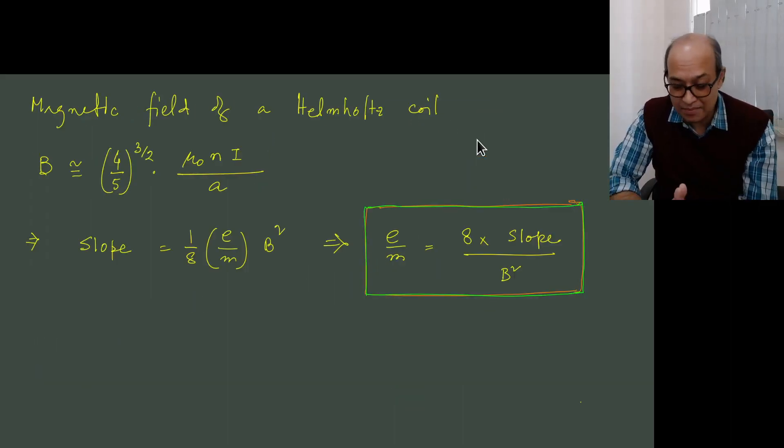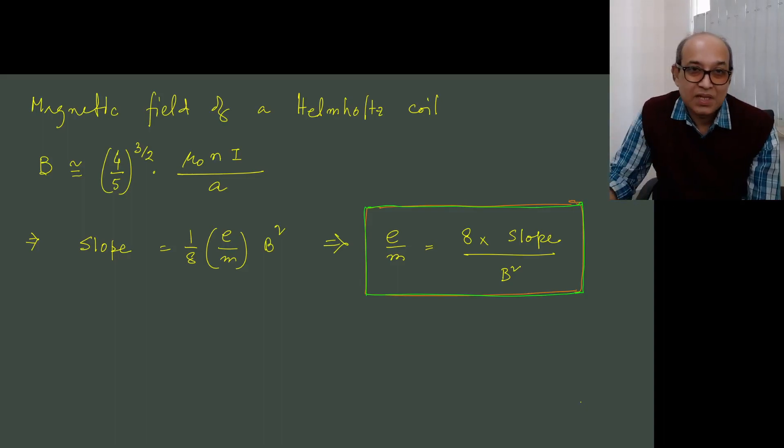Well, remember that magnetizing control, that current, that determines I, the current that you are passing through the Helmholtz coil. And it has a certain number of turns which will be given to you, typically a value between say 100 and 200 in a typical laboratory setup. A is the radius of the Helmholtz coil, typically again 14 to 15 centimeters.